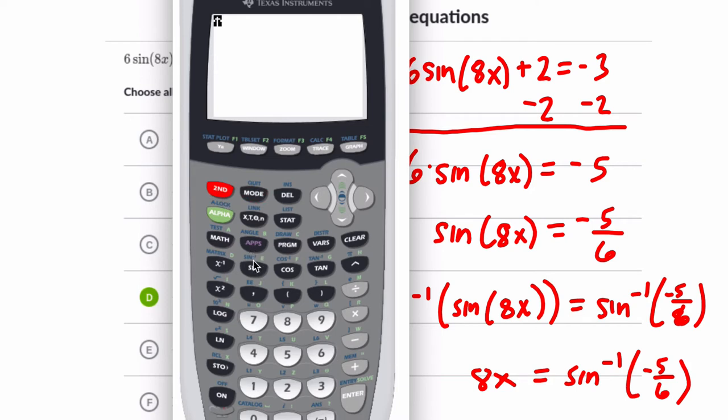I'm going to hit second sine, and then negative 5 divided by 6. Hit enter.